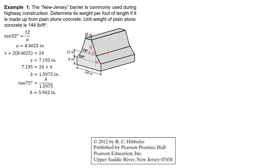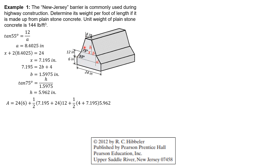Now that all dimensions are complete, we can compute the cross-sectional area. It is the area of the rectangle plus the area of the first trapezoid plus the area of the second trapezoid. So: 24 × 6 + one-half × (24 + x) × 12 + one-half × 4 × h, where x = 7.195 inches and h = 5.962 inches. Computing the area gives 364.54 square inches.